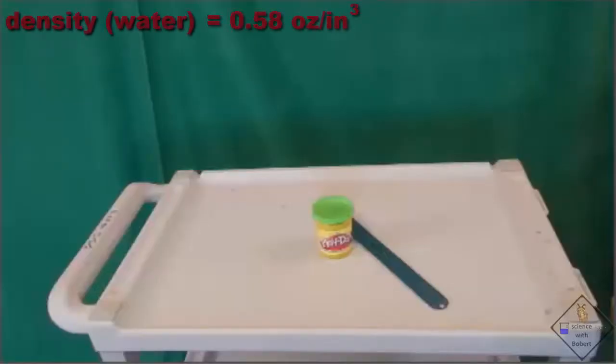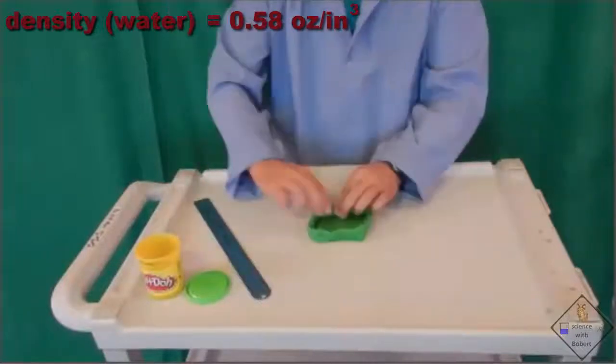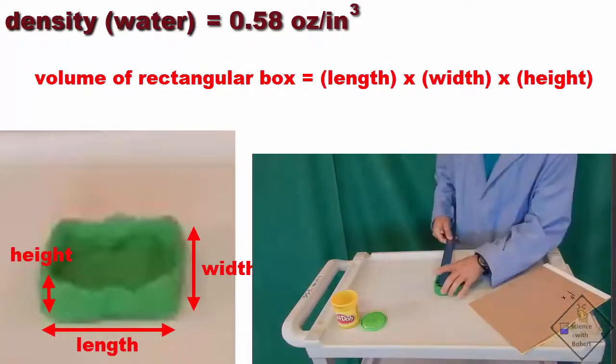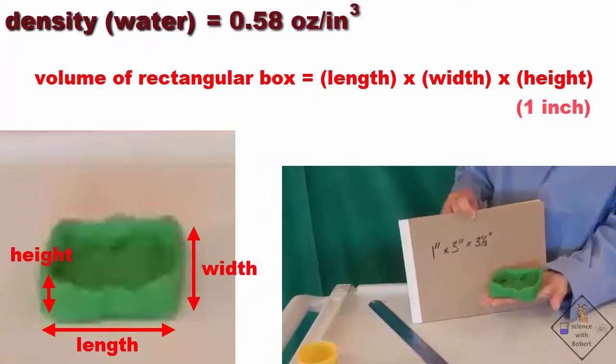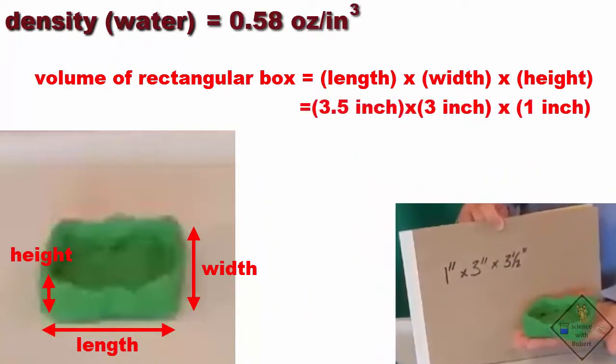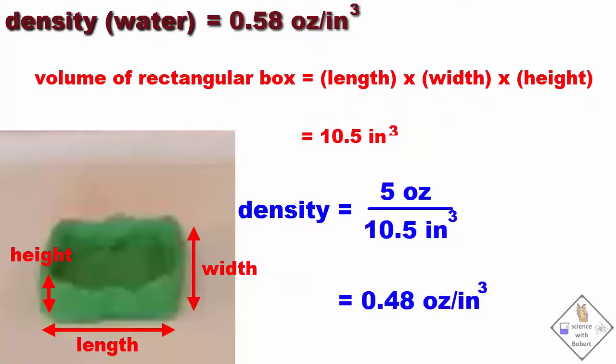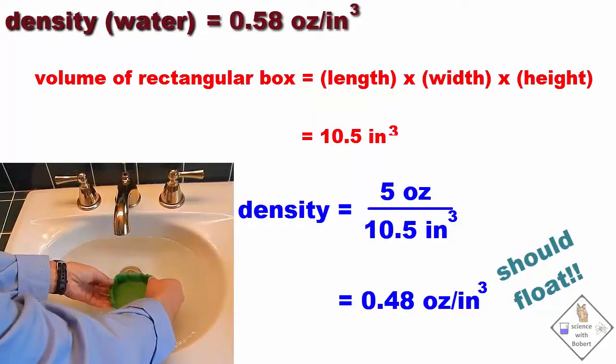What if we don't roll our Play-doh into a sphere? What if we make its shape a little more interesting? Let's try making a rectangular box. The volume of a rectangular box is length times width times height. The volume of our rectangular box is one inch by three inches by three and a half inches, which is 10.5 cubic inches of volume. So the density of our rectangular box is five ounces divided by 10.5 cubic inches, or 0.48 ounces per cubic inch. That is a density that is less than the density of water. It should float. And it does.